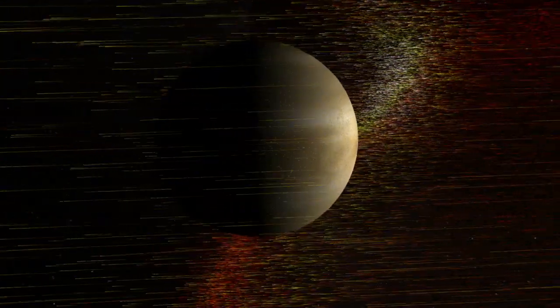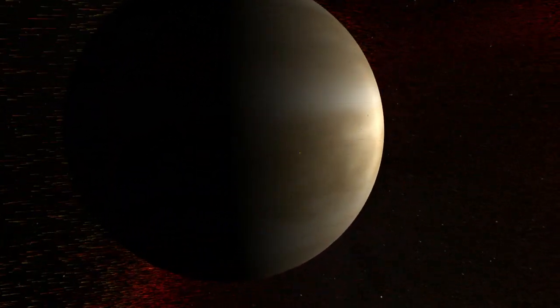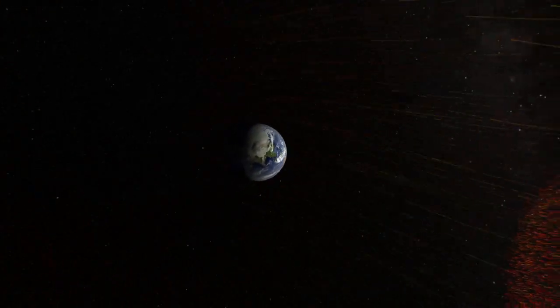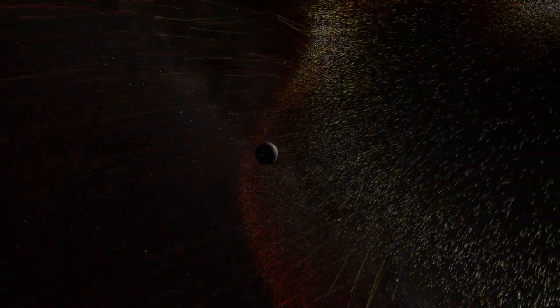What's left is a witch's brew of noxious chemicals, including thick, sulfurous clouds. How has Earth avoided the grim fate of Venus? We can see the answer as the solar storm approaches Earth.